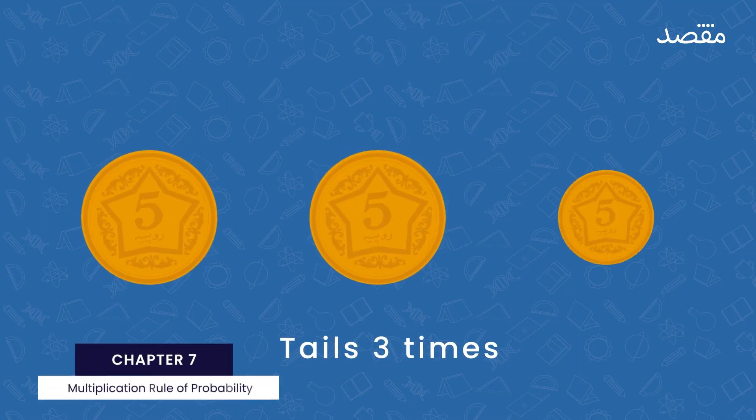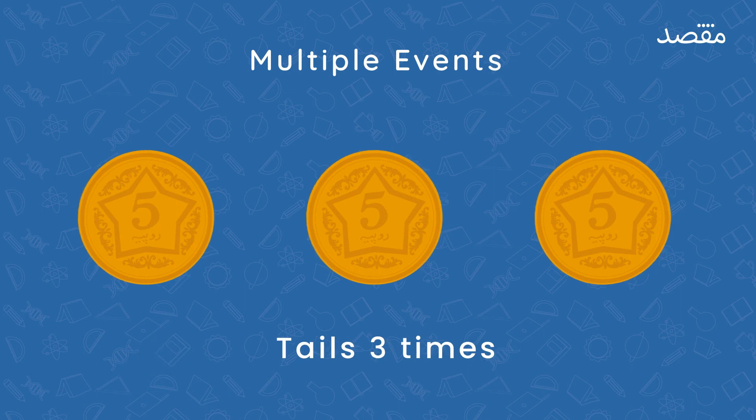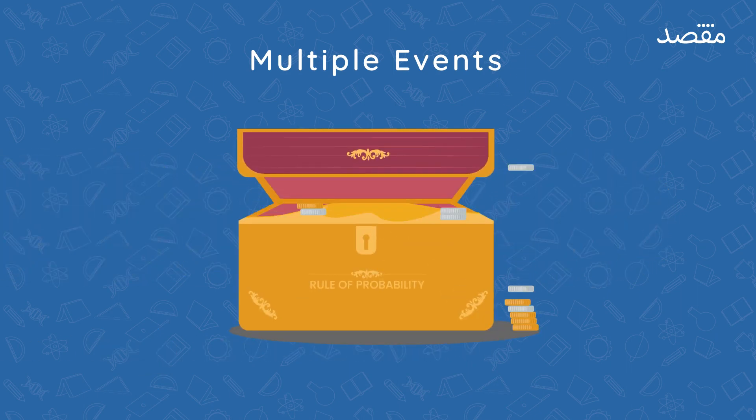What's the chance of flipping tails three times in a row? When we talk about two or more events together, we can use the multiplication rule of probability.